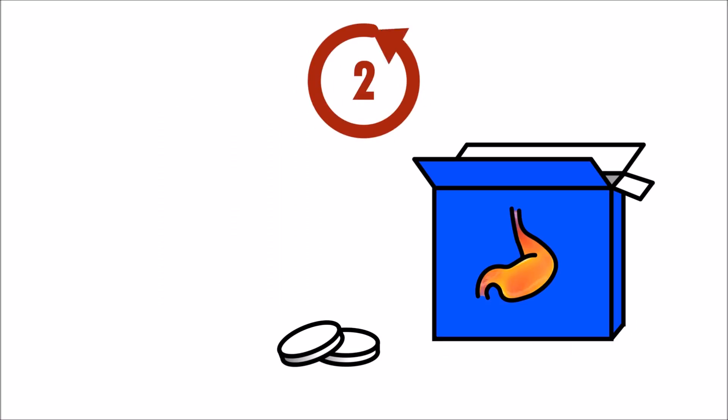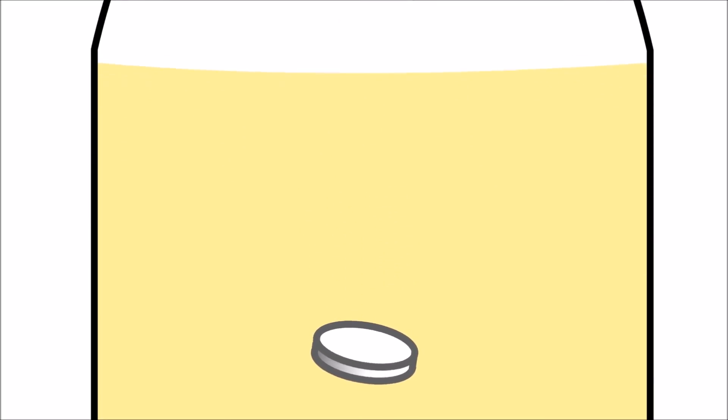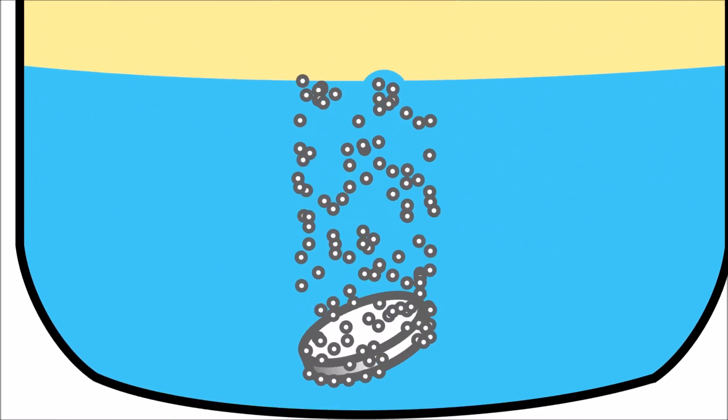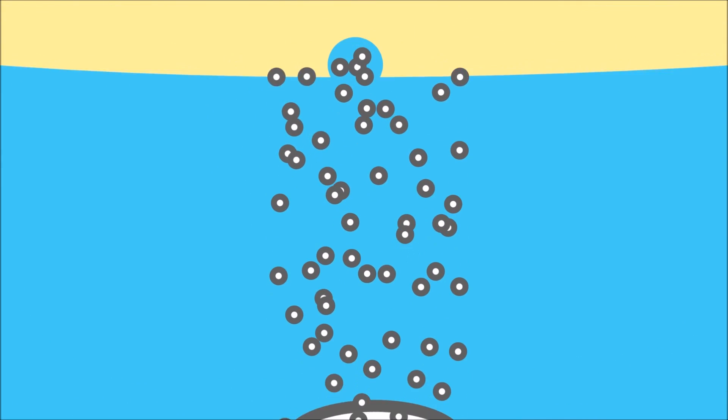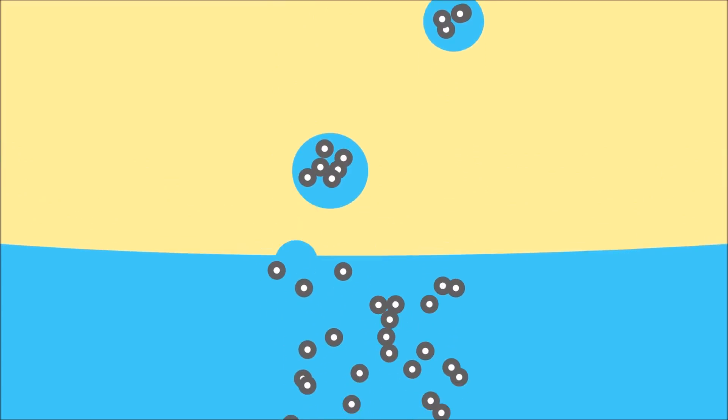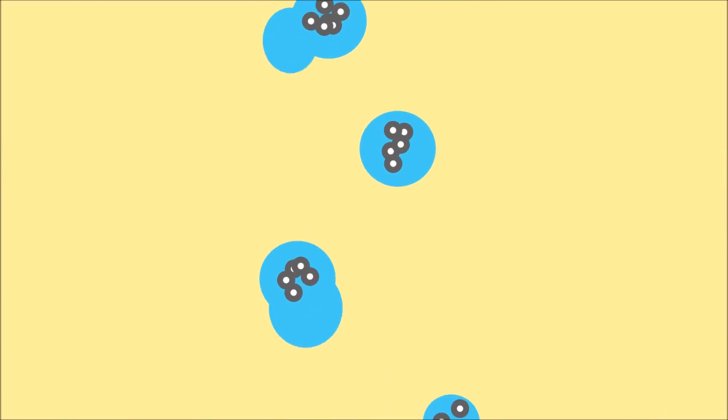The second step is the antacid tablets. The antacid reacts with the water and produces carbon dioxide gas bubbles. Some of the water sticks to the bubbles. Because the bubbles are less dense than both the water and the oil, they rise to the top.